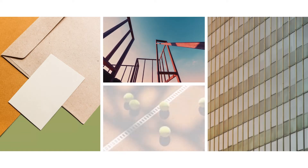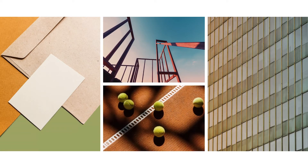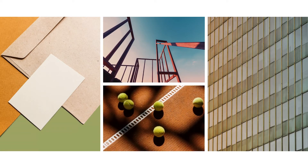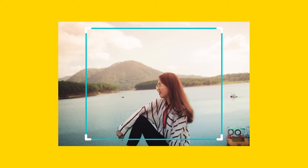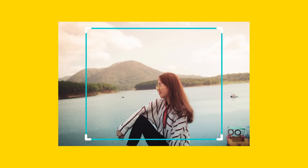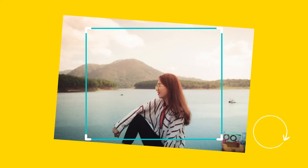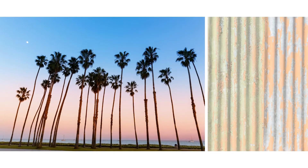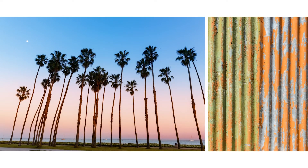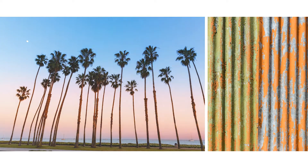Speaking about lines, cropping is really effective when you need to straighten lines, like horizons. Simply rotate the crop so the finished image has a straight horizon. This works well for vertical lines as well.